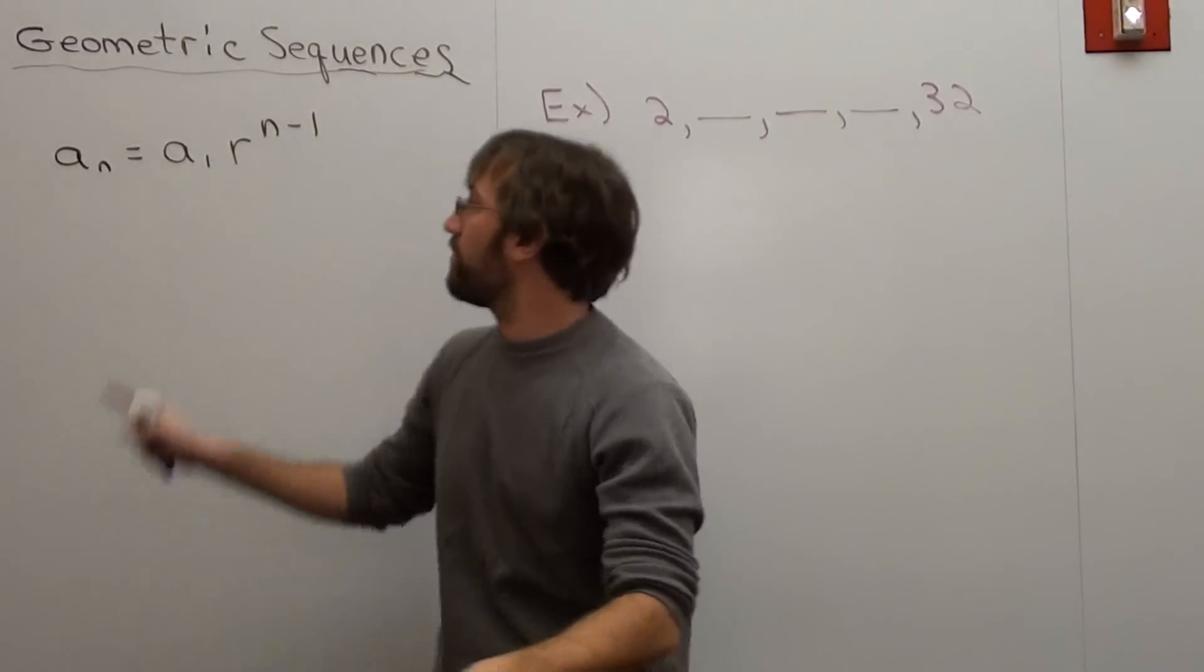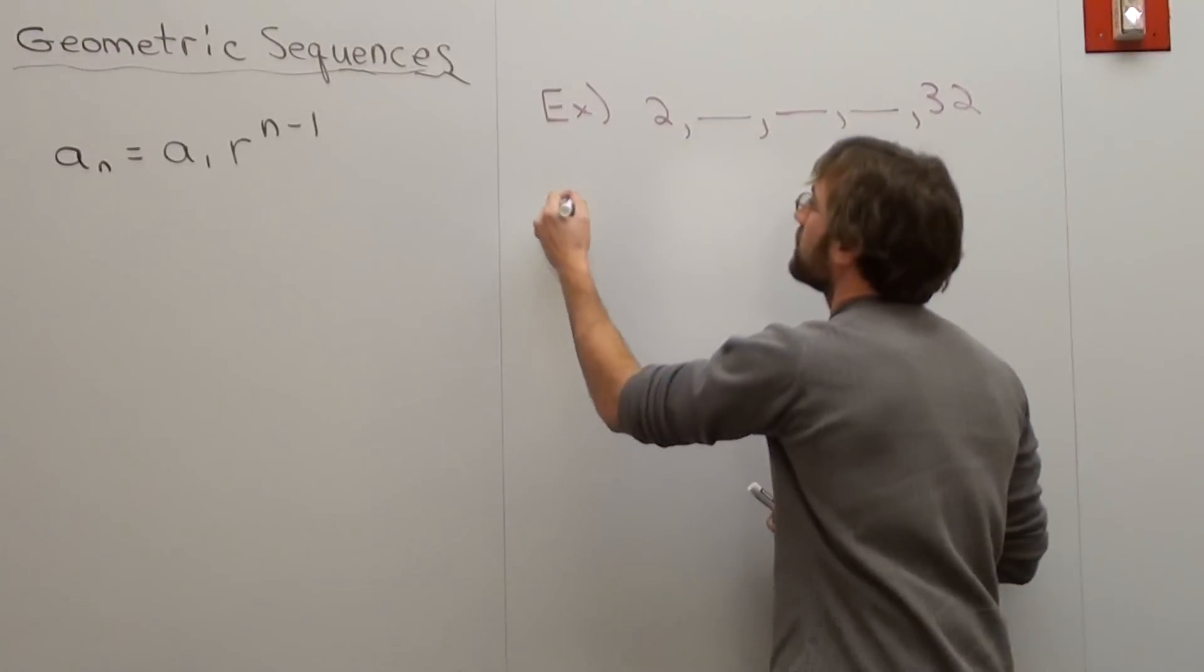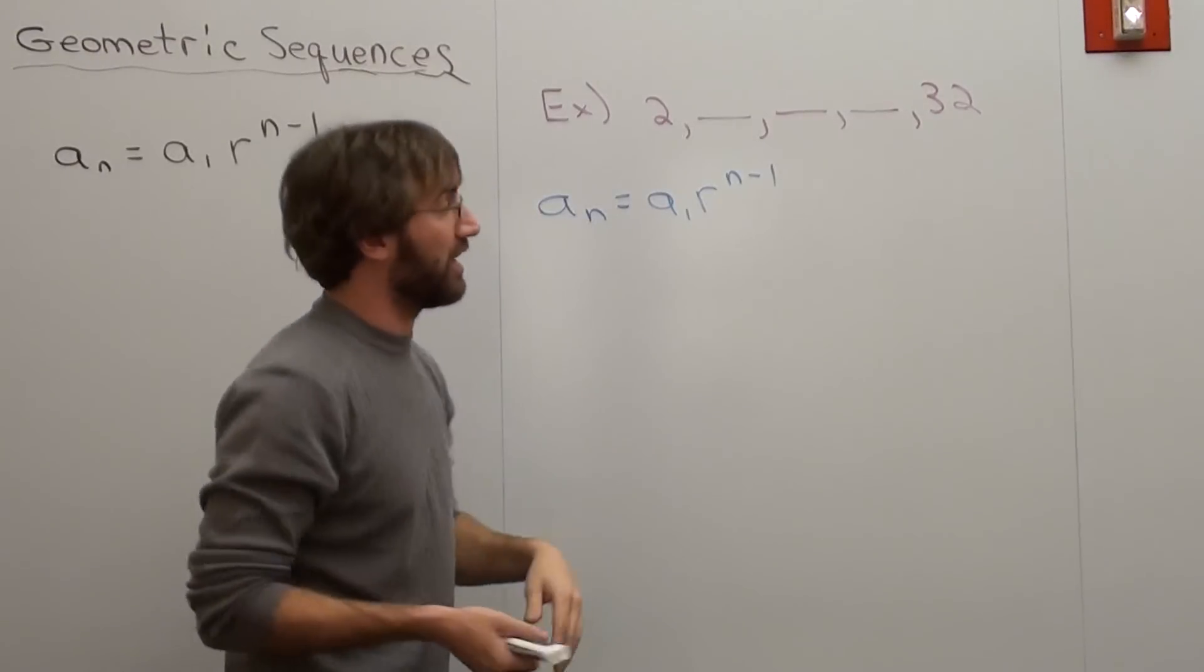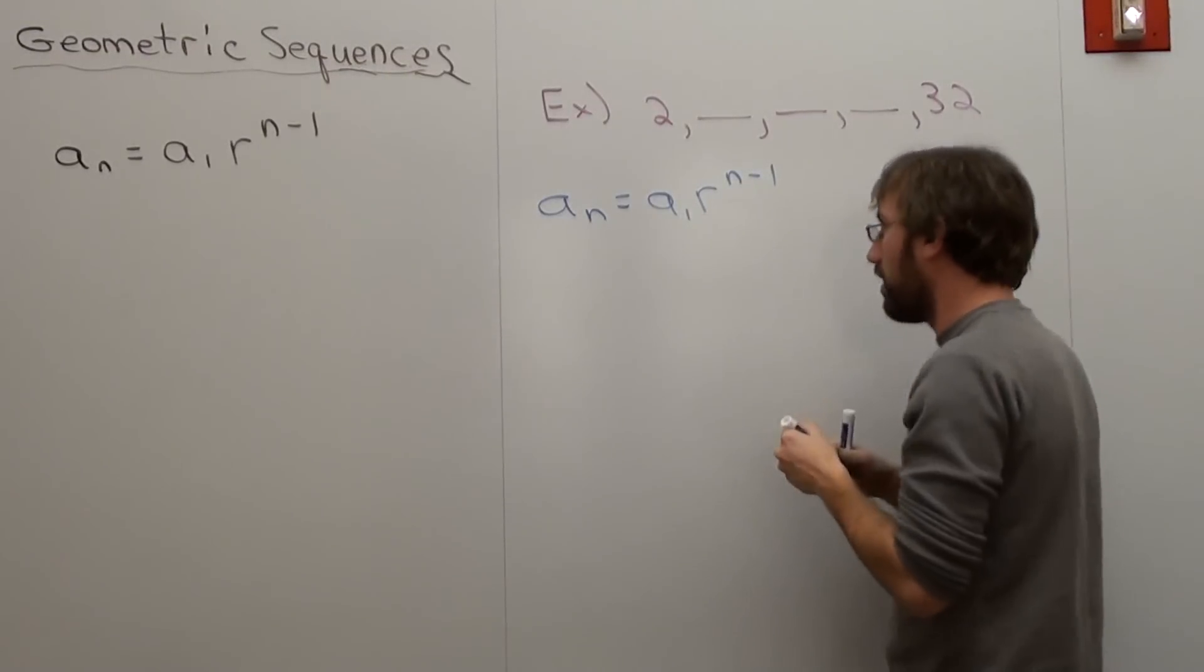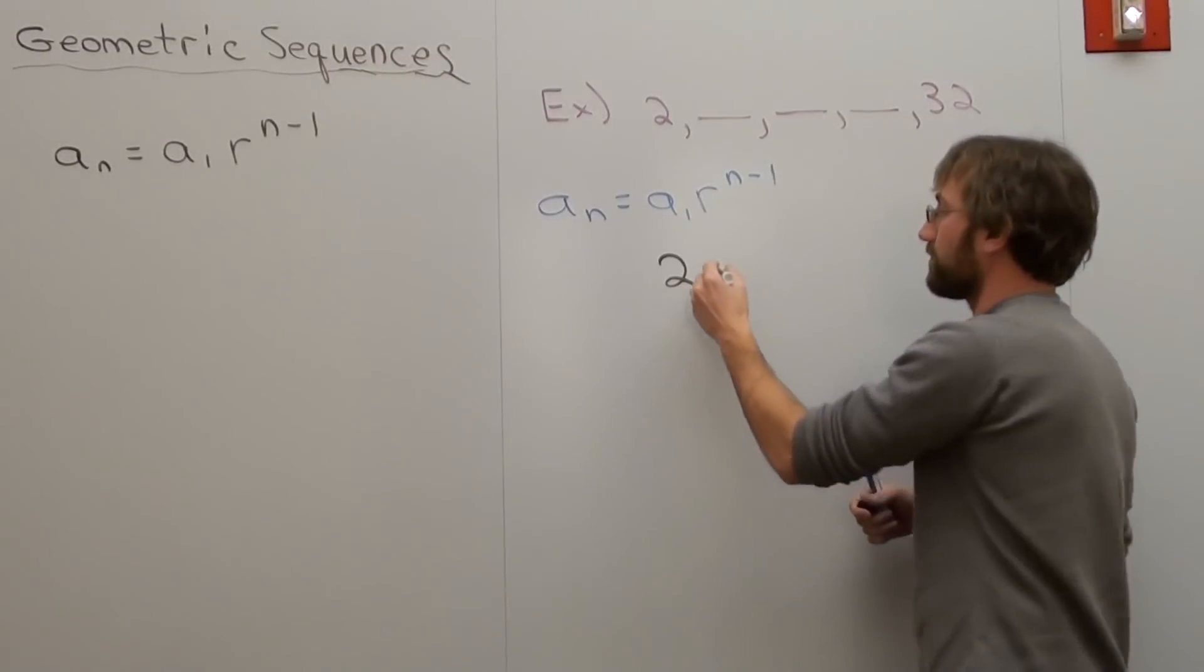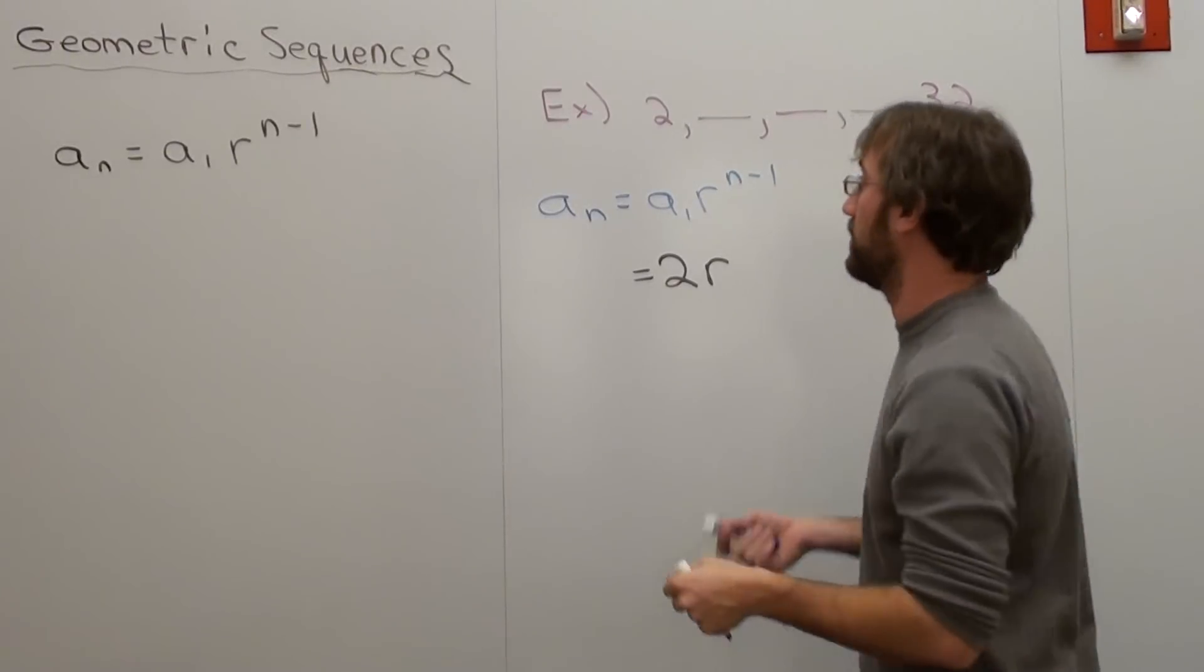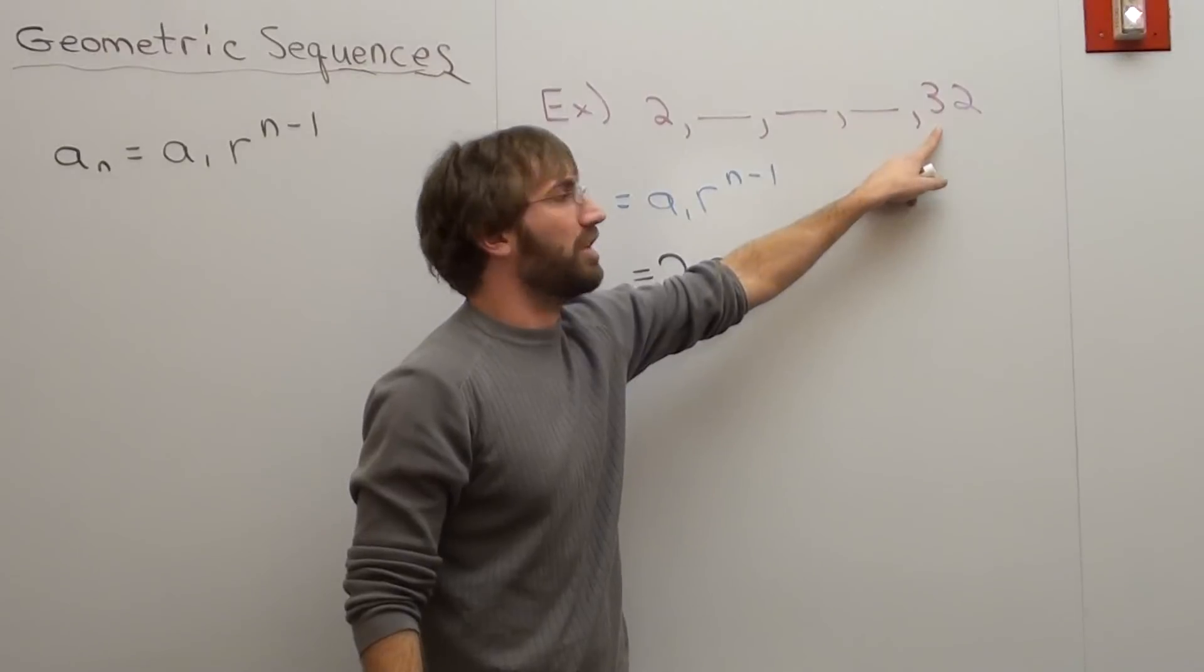So what I want to do is use this formula, a sub n equals a sub 1 r to the n minus 1. And I'm trying to fill in as much as I can, so clearly, I know my a sub 1 is 2 because my first term in this sequence is 2. I don't know my r.